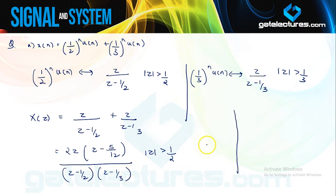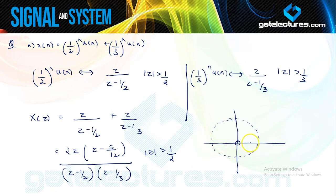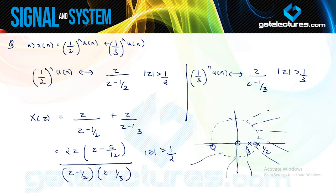Since both ROCs overlap, X(z) = z/(z−1/2) + z/(z−1/3) = 2z·(z−5/12)/[(z−1/2)(z−1/3)], with common ROC |z|>1/2. This expression has two zeros at z=0 and z=5/12, and two poles at z=1/2 and z=1/3. The ROC is the region |z|>1/2, which is outward from the circle of radius 1/2.